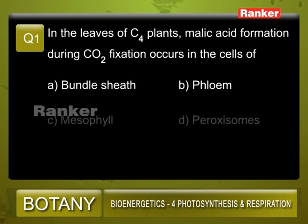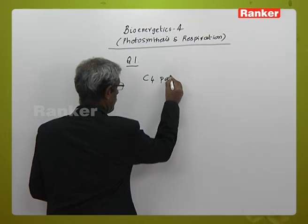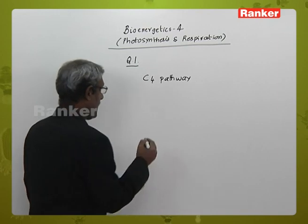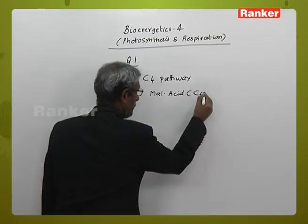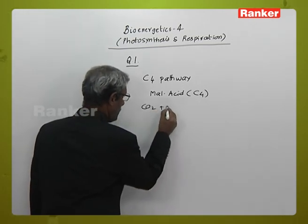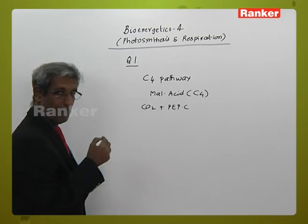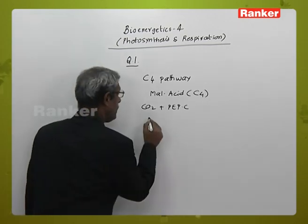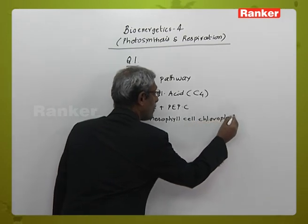Question number 1: In the leaves of C4 plants, malic acid formation during carbon dioxide fixation occurs in the cells of — A: bundle sheet cells, B: phloem, C: mesophyll cells, D: peroxisomes. We are dealing with the C4 pathway. C4 pathway is characterized by the presence of malic acid. Malic acid is a C4 acid which is initially formed because carbon dioxide combines with phosphoenolpyruvate carboxylase, resulting in the formation of malic acid. This malic acid is formed in the mesophyll cell chloroplast.